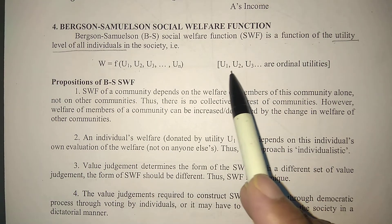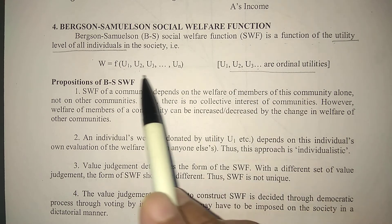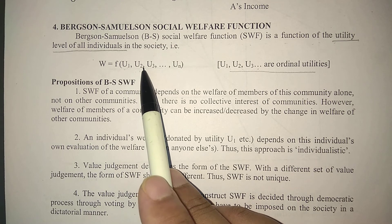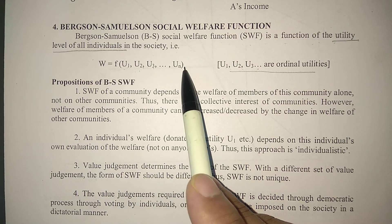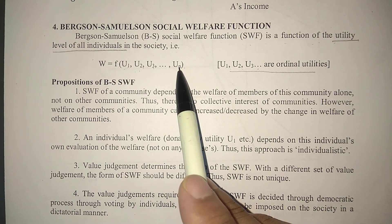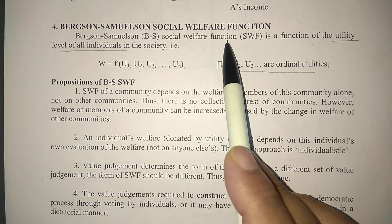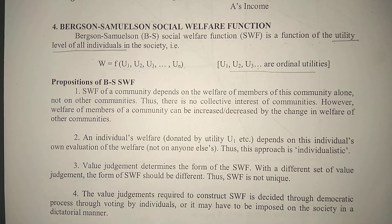This utility is ordinal utility. There are one, two, three individuals. Each individual's utility — the first individual's utility, the second individual's utility, the third individual's utility — represents all individuals' utilities. Together these utilities and individuals form the social welfare function. This is the introduction of the Bergson-Samuelson social welfare function.